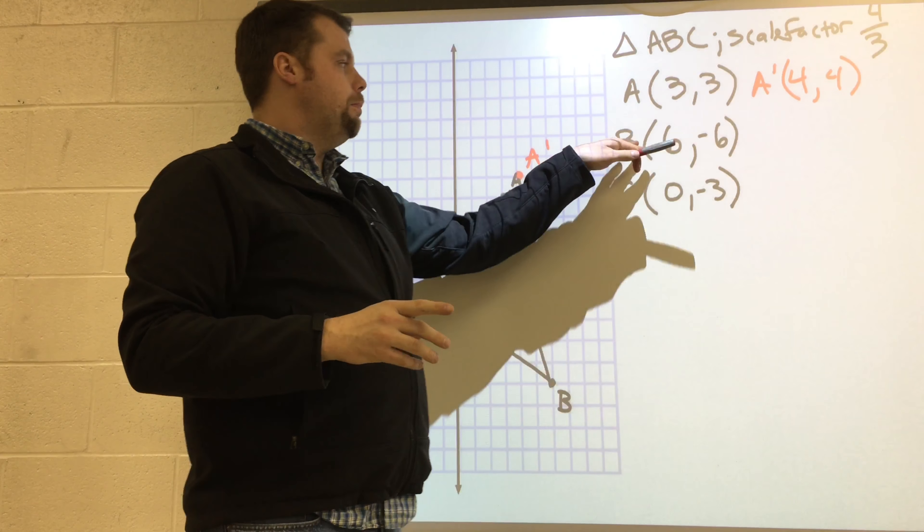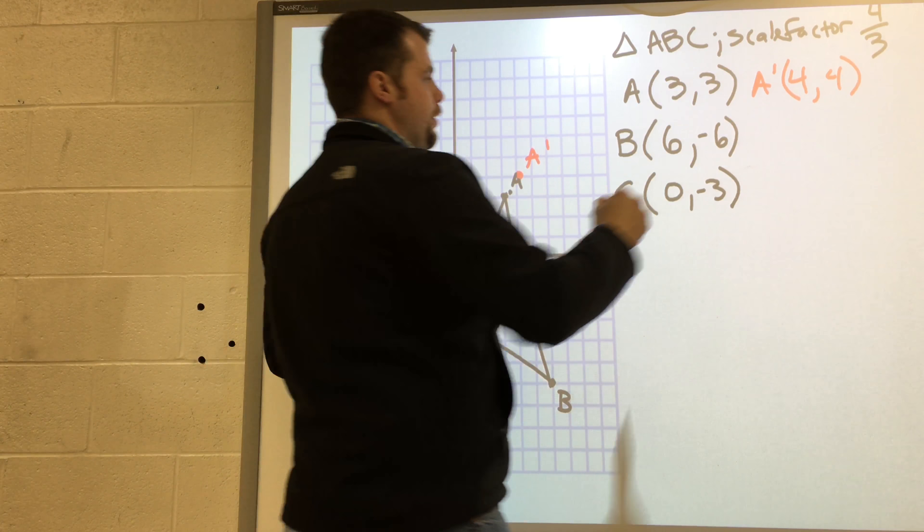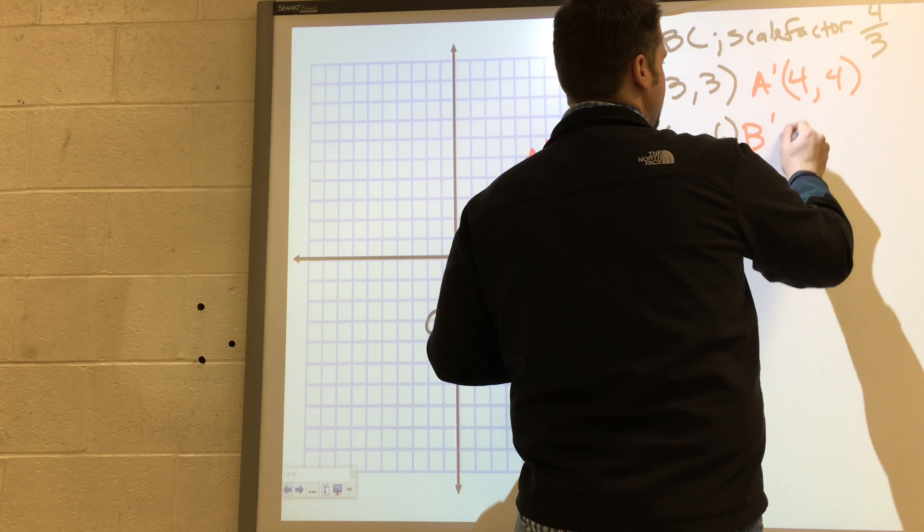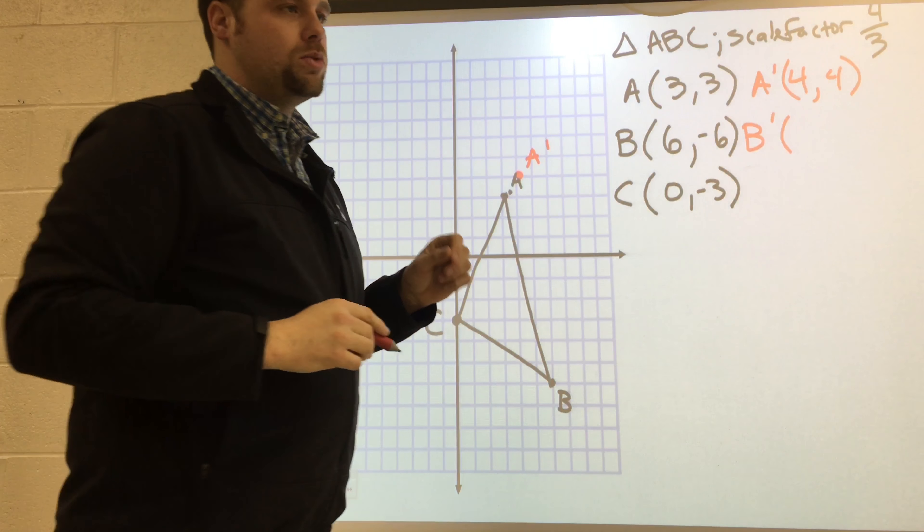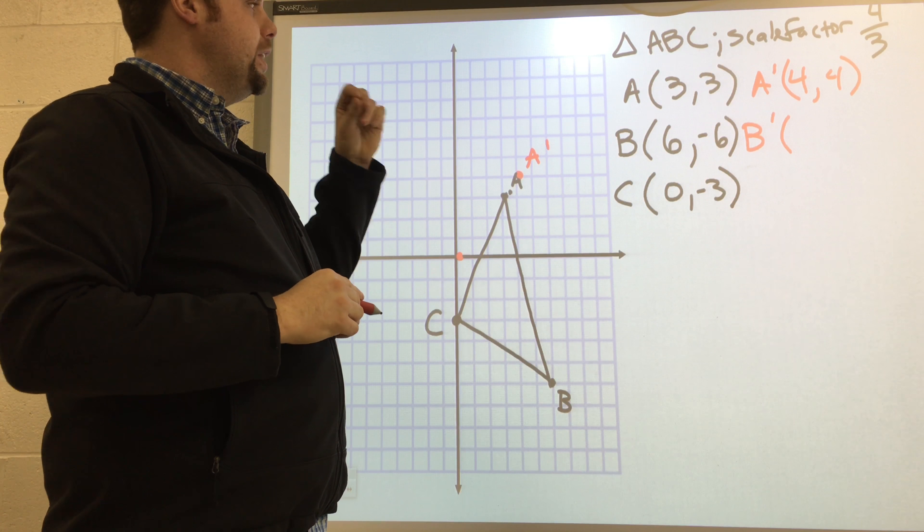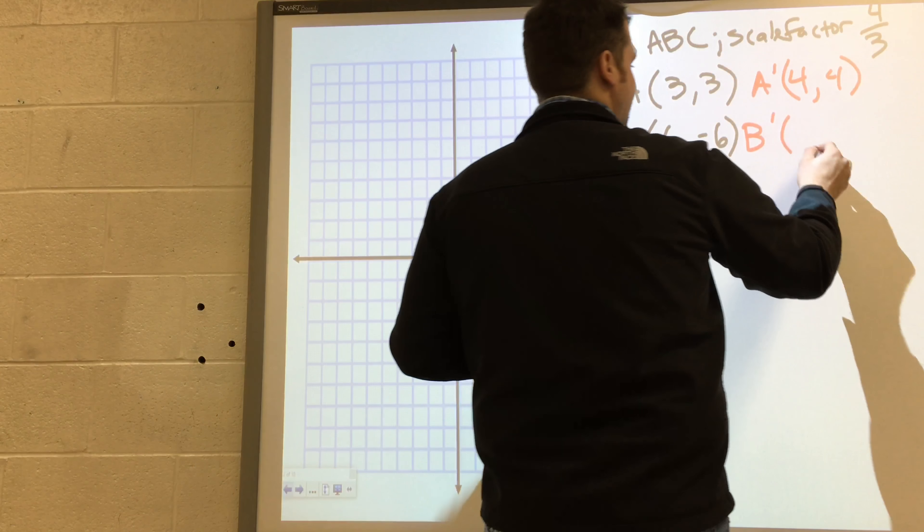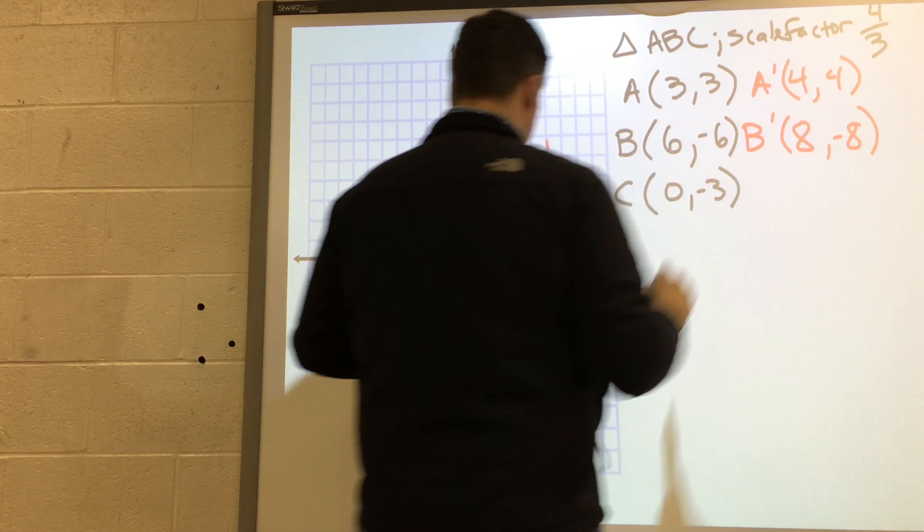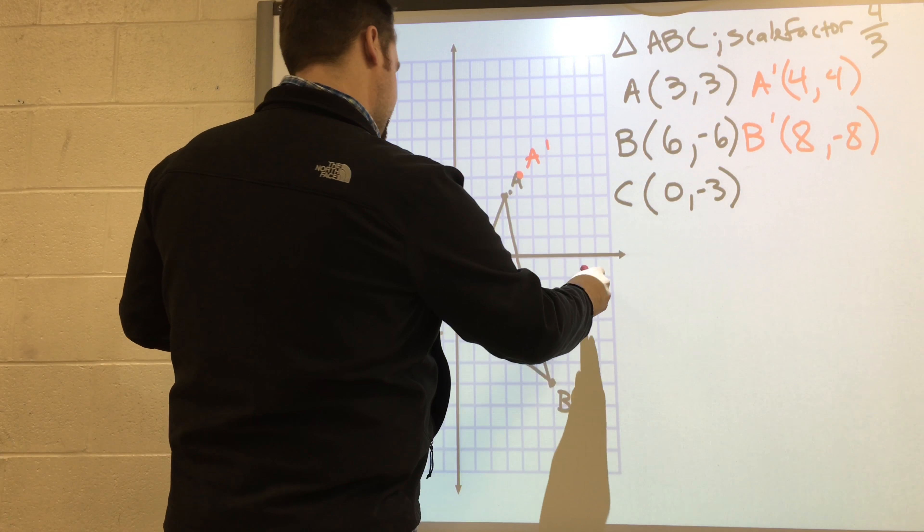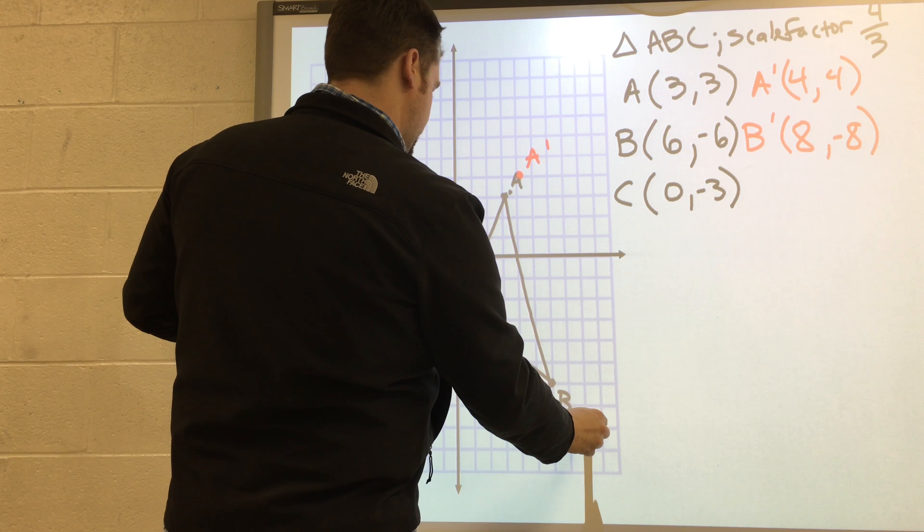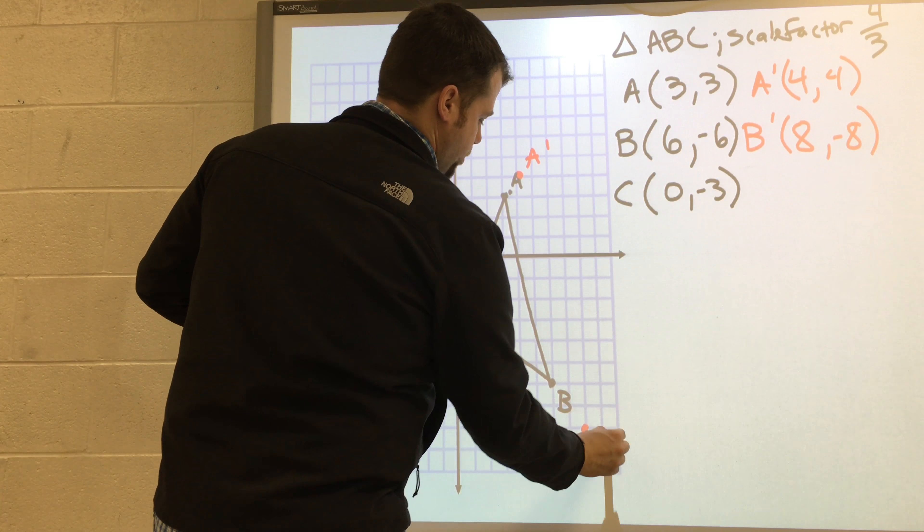I do the same thing for B. B was six, negative six. If I take six times four-thirds, six times four is 24. 24 over three is going to be eight. So that's eight and negative eight. Eight, negative eight would be right here. And that's your B-prime.